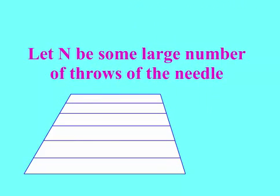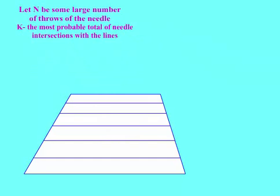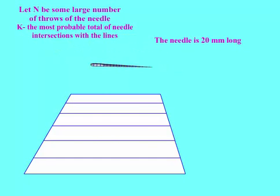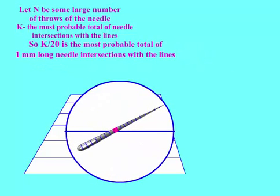Let N be some large number of throws of the needle. K is the most probable total of needle intersections with the lines. So K over 20 is the most probable total of 1mm long needle intersections with the lines.